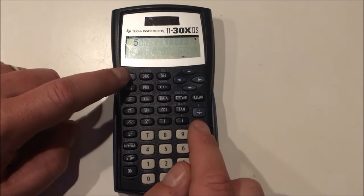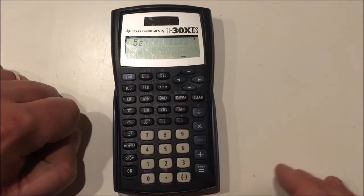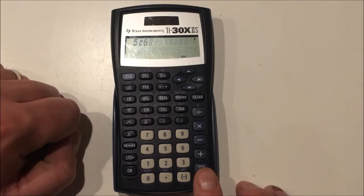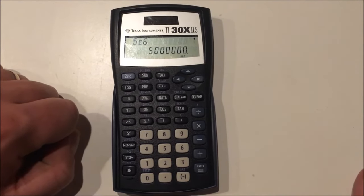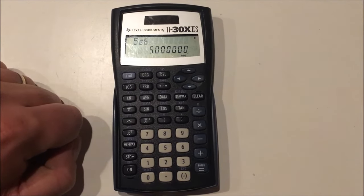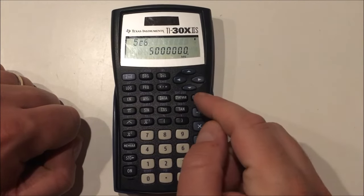And I get 5 million again. So that's a little shorter way to do it. And that's what the e stands for, times 10 to the.